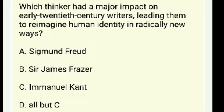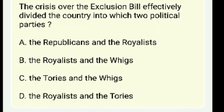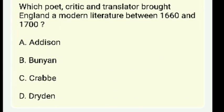Which thinker had a major impact on early 20th century writers? The answer is all but C — Sigmund Freud and Sir James Frazer. The crisis over the Exclusion Bill divided the country into two political parties — the Tories and the Whigs. This is now a revision session.